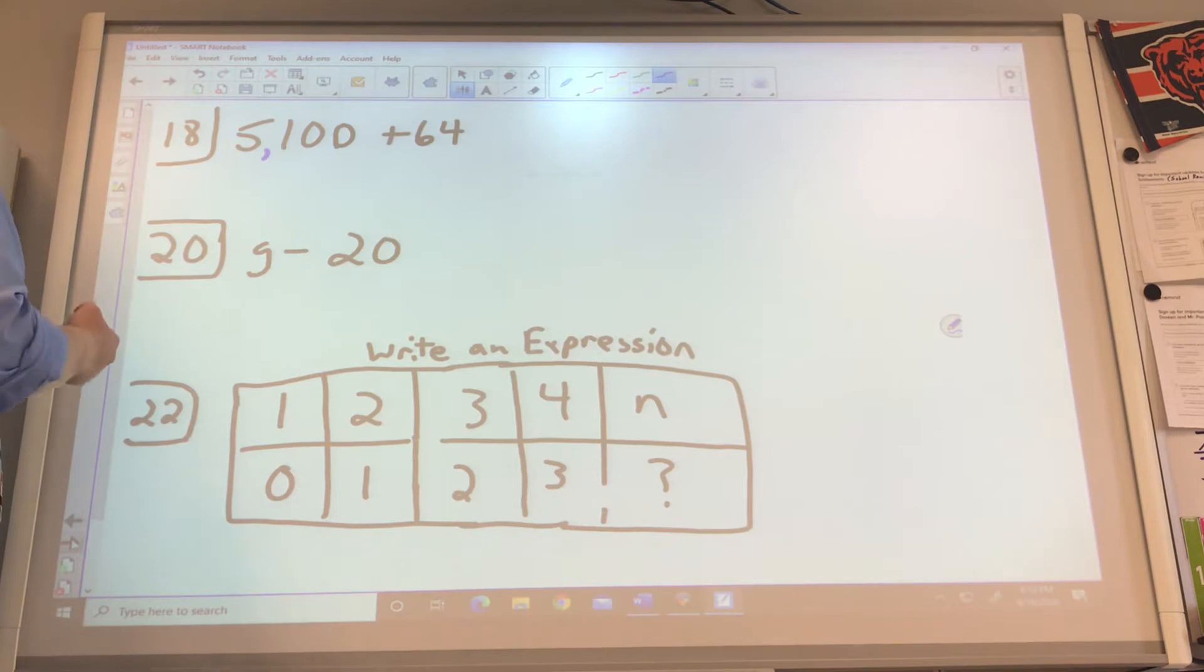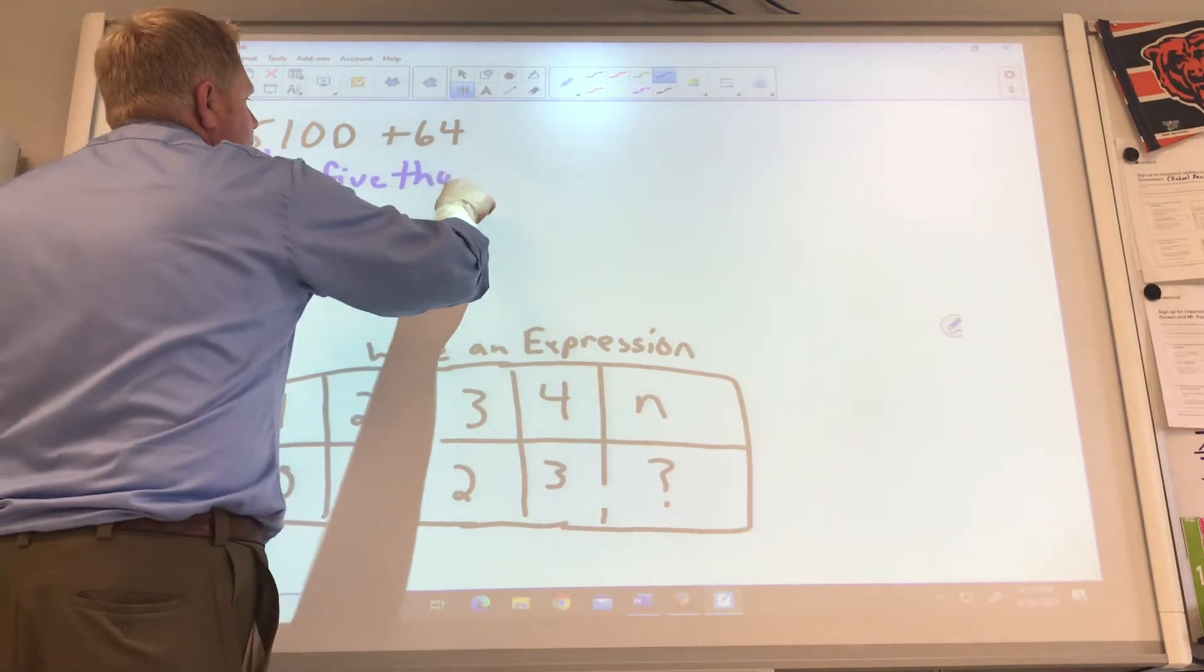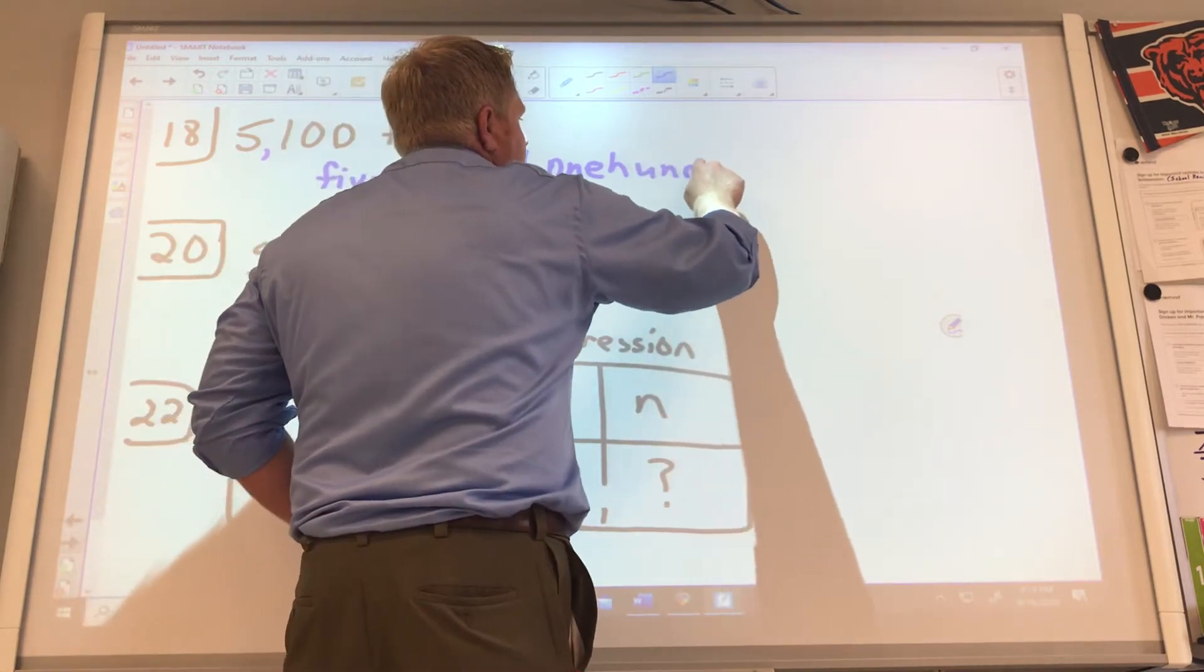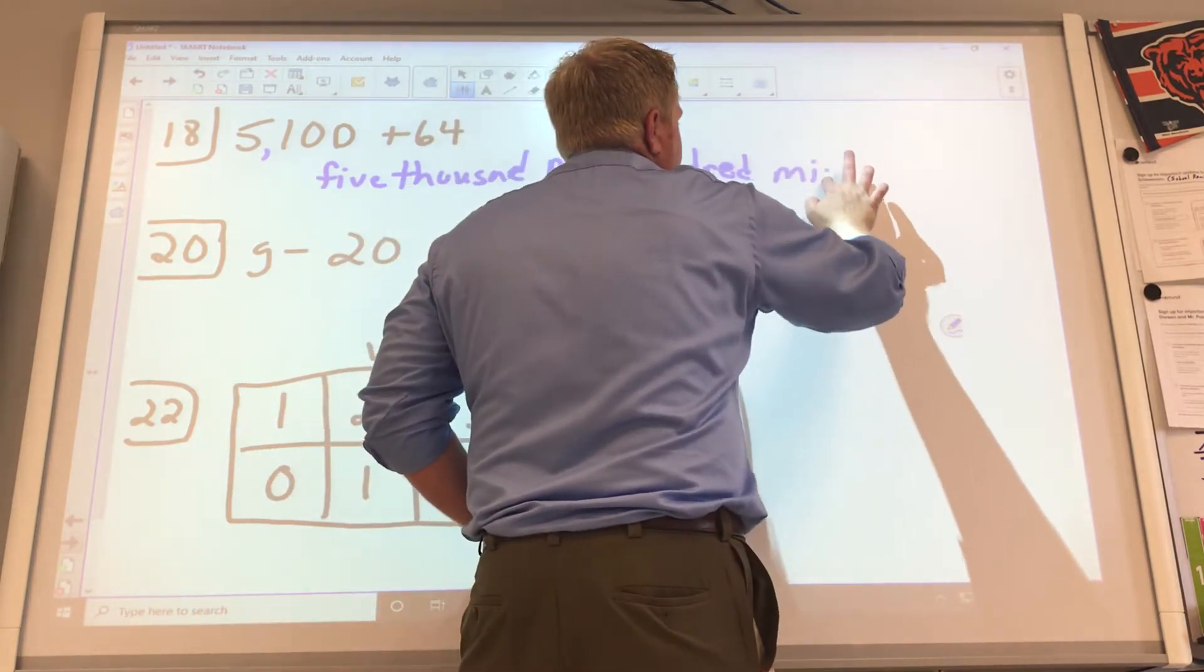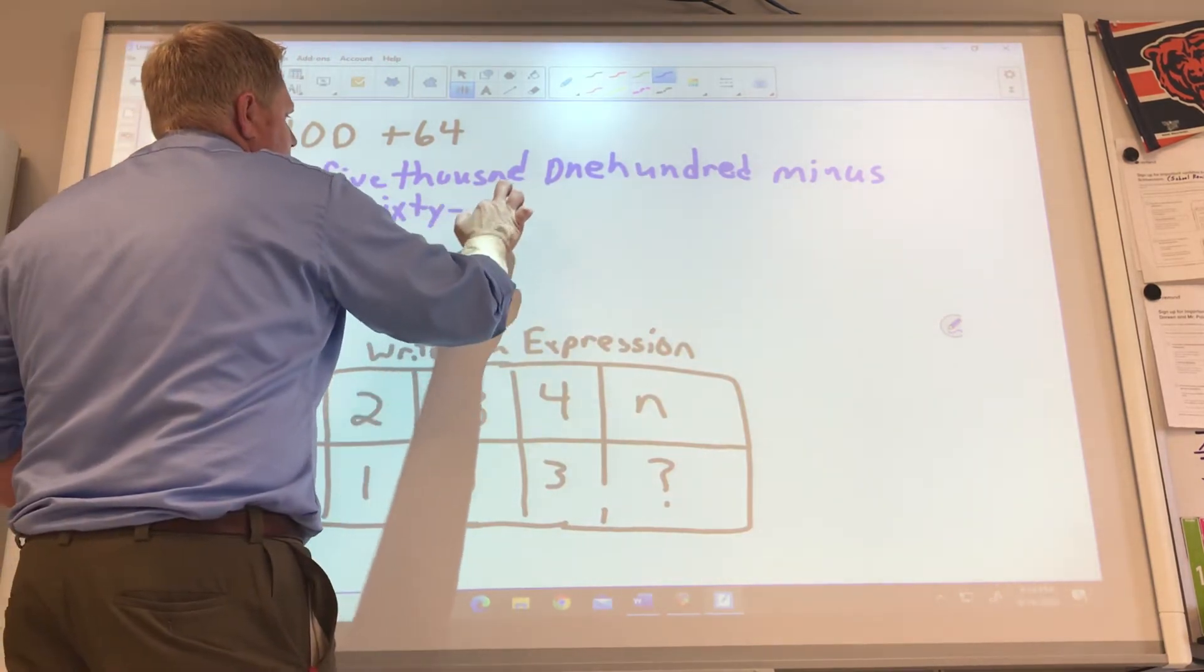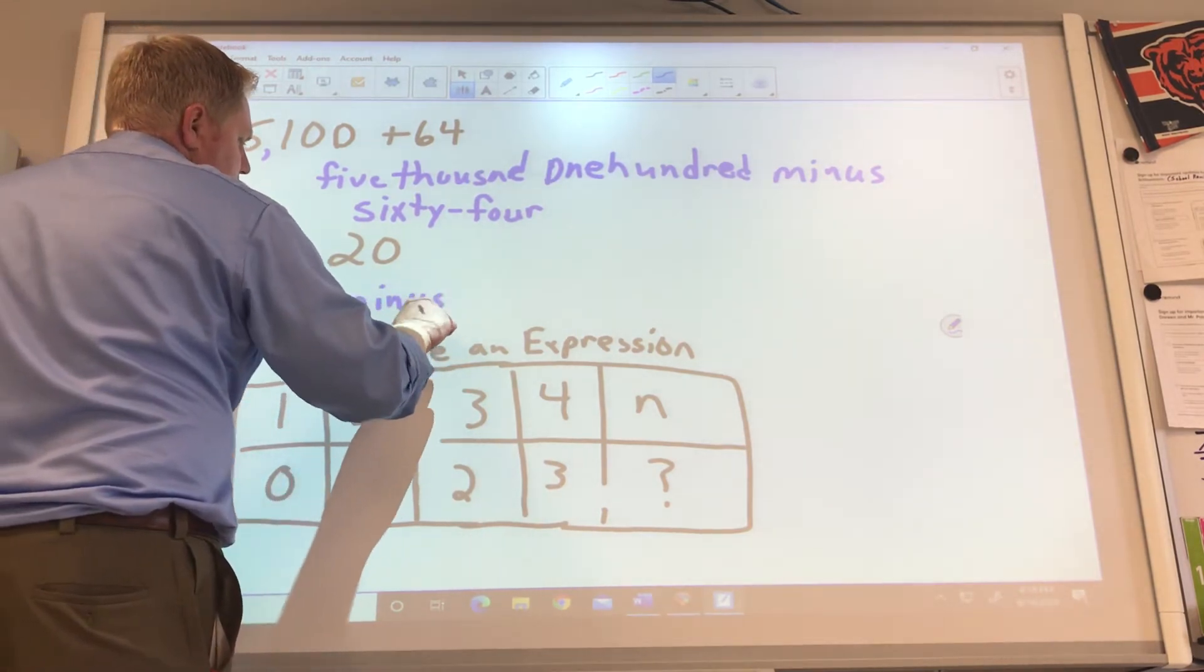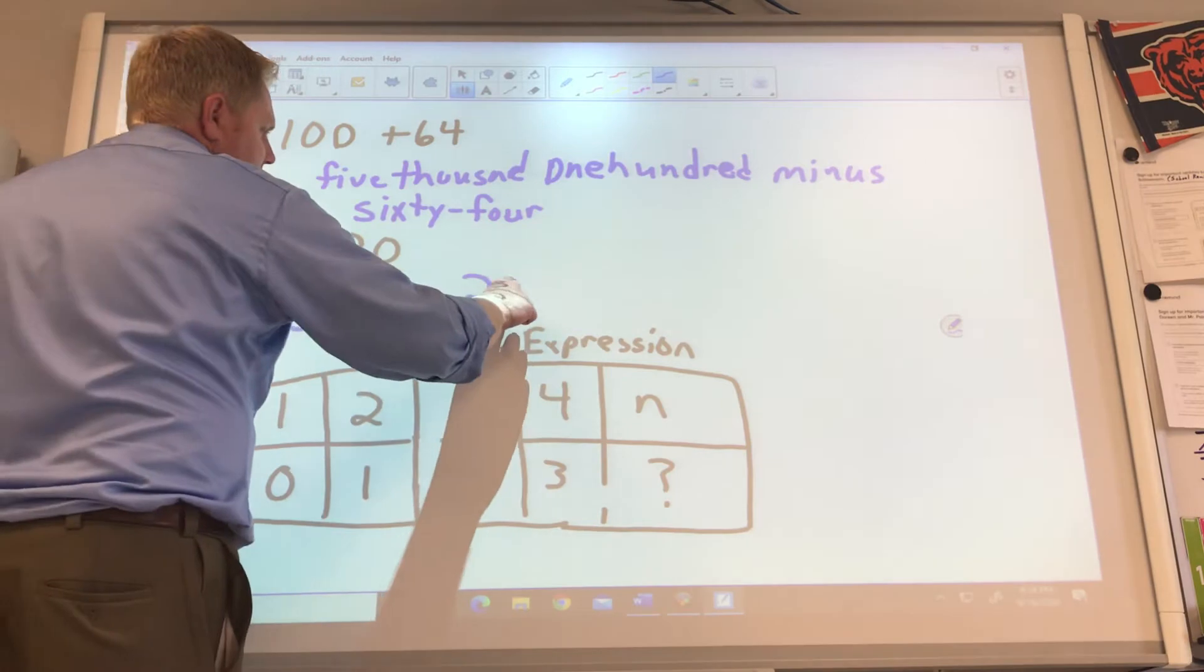5,164 plus 64. Skipping down to the next line. And you're good to go with the happy answer. This one would be G minus 20. Remember, order is important when we do minus or subtraction and division.